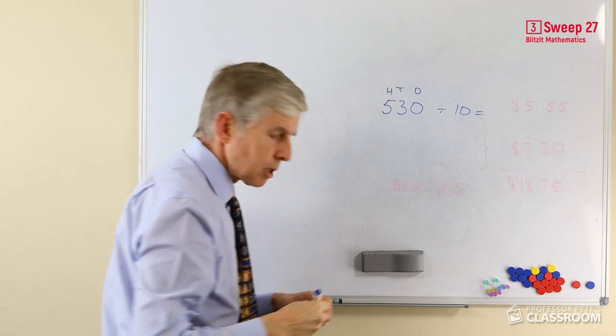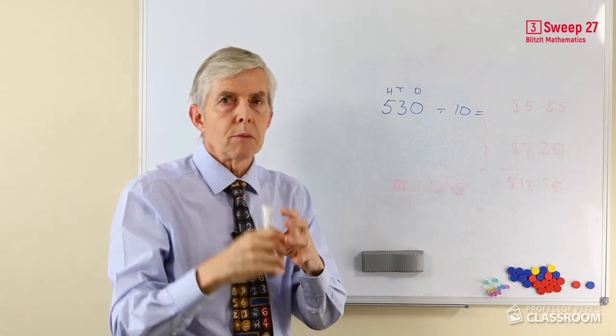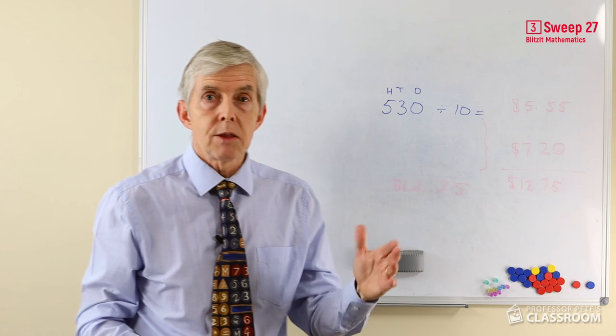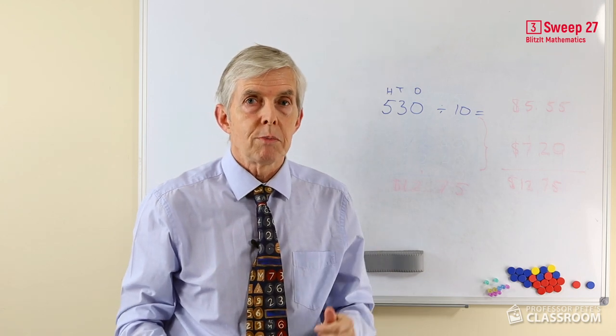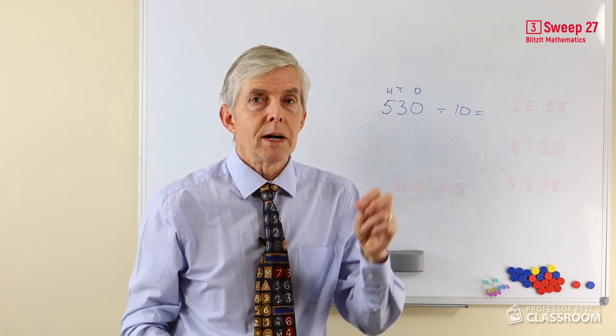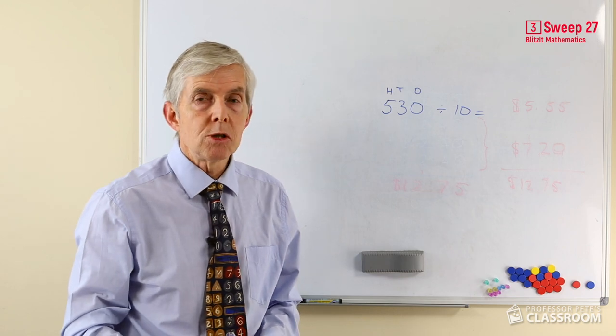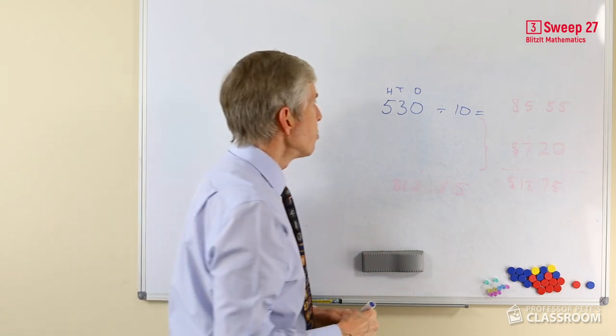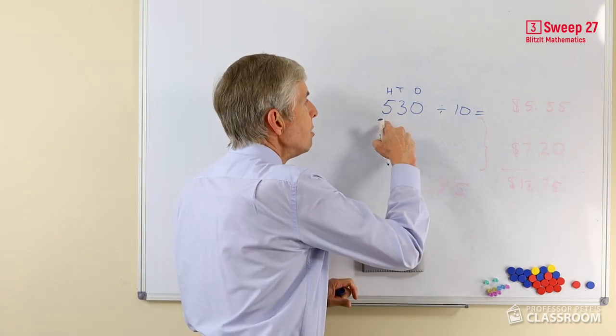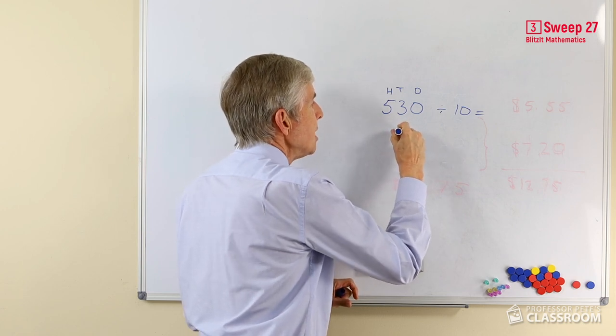This time we're getting smaller—dividing into smaller parts. If you have 100 and take a tenth of it, linking back to our previous sweep, or divide it by 10, you get 10. So 5 hundreds divided by 10 will become 5 tens.